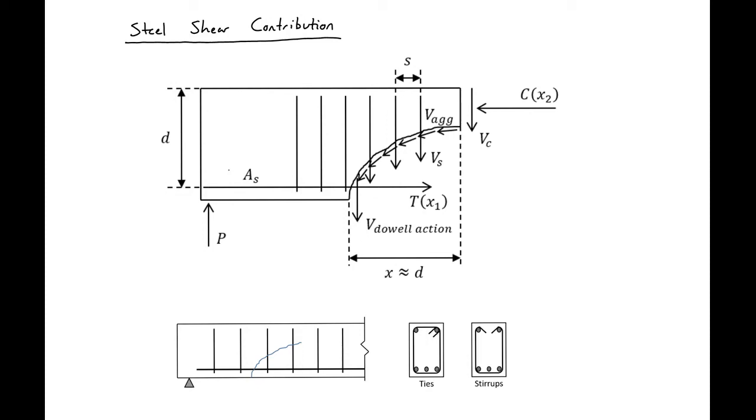Another way we can resist shear in reinforced concrete structures is using shear reinforcement. When shear reinforcement crosses a crack, as shown in the top section, it will resist shear directly.